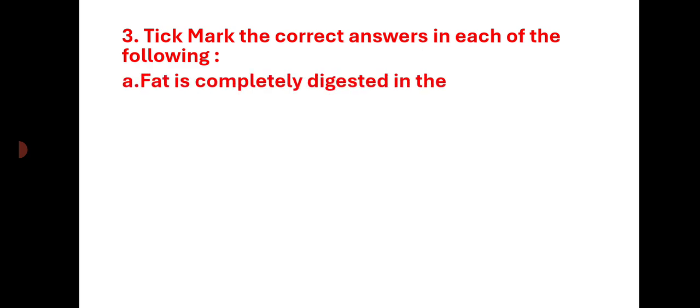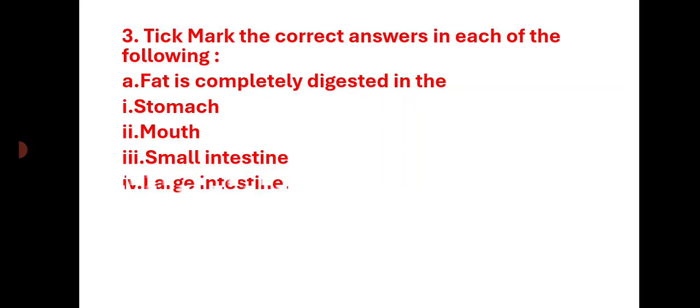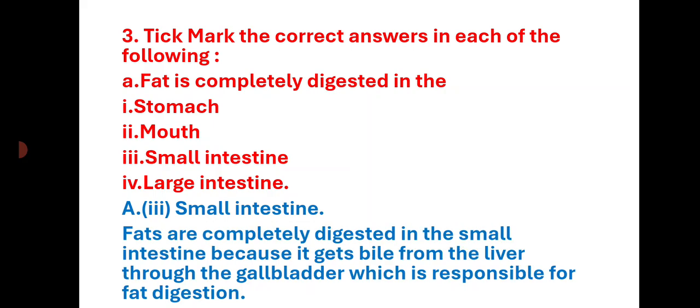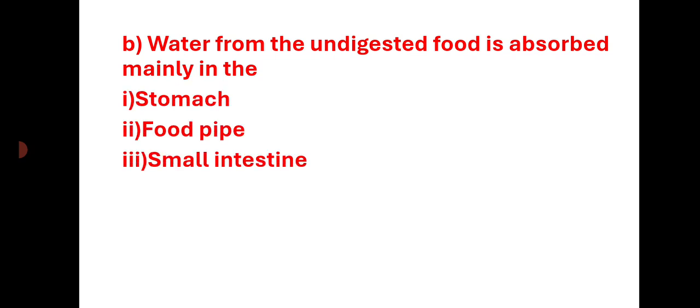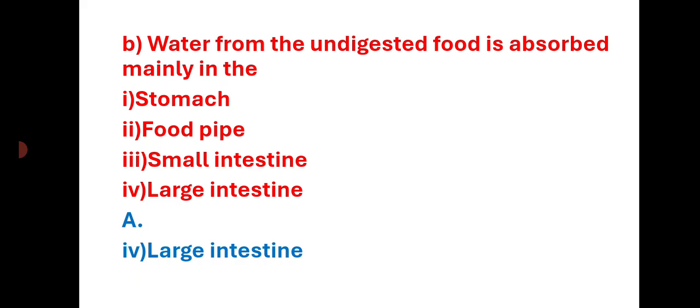Tick mark the correct answer: Fats are completely digested in — stomach, mouth, small intestine, or large intestine? The correct answer is small intestine, because fats are completely digested there with the help of bile from the liver, which is responsible for fat digestion. Water from the undigested food is absorbed mainly in — stomach, food pipe, small intestine, or large intestine? The answer is large intestine.